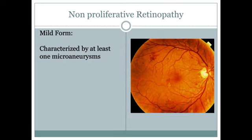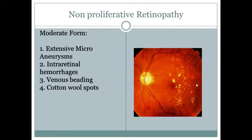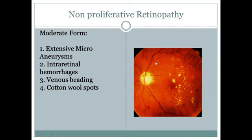The mild form is characterized by at least one microaneurysm. The moderate form shows intraretinal hemorrhages, venous beading, and cotton wool spots — which form when nerve damage causes axoplasmic protein accumulation.